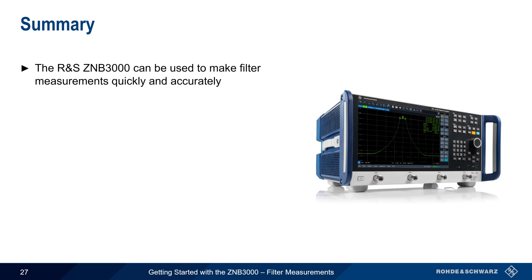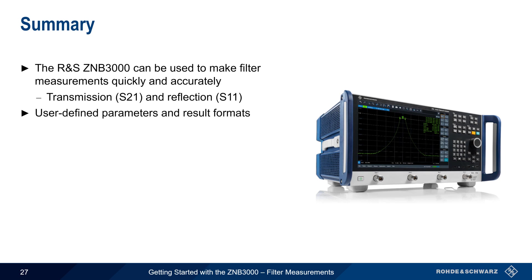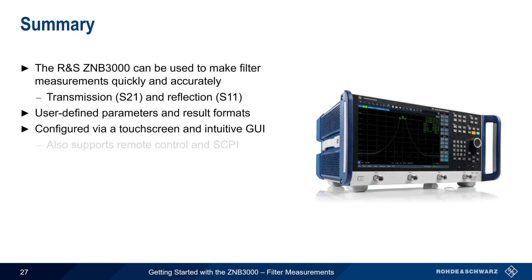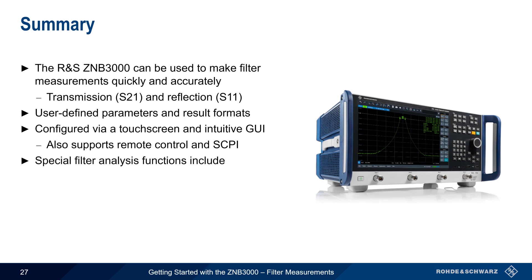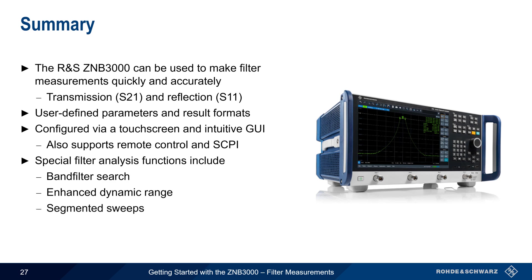Let's end with a brief summary. The Rohde & Schwarz ZMB3000 Vector Network Analyzer can be used to make filter measurements quickly and accurately, including both transmission or S21 measurements and reflection or S11 measurements. All measurement parameters are user configurable, and results can be displayed in a variety of formats. In this presentation, we've shown how to configure and interpret measurements using the ZMB's touchscreen and graphical user interface, and the ZMB also supports remote control and SCPI-based test automation. The ZMB3000 also supports several functions helpful when measuring filters: band filter search for automatically calculating important filter parameters, enhanced dynamic range which aids in measuring high-performance filters, segmented sweeps for optimizing speed, accuracy, and dynamic range, and averaging to improve measurements in the stopband.